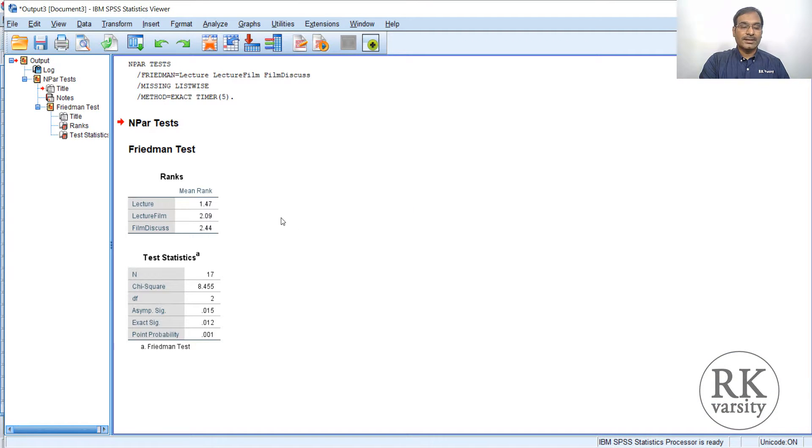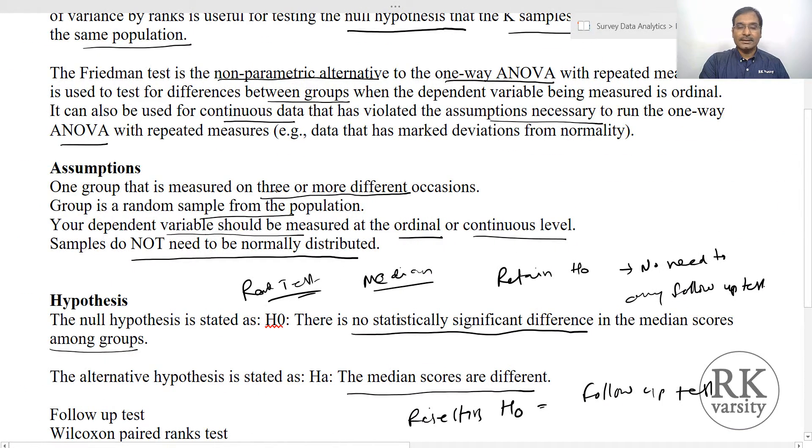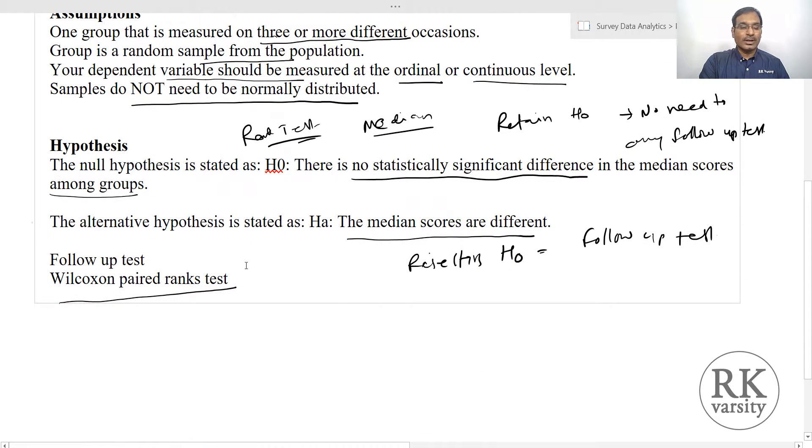So here is the result. Now the mean ranks of lecture is 1.47, lecture plus film is 2.09, film followed by discussion is 2.44. And n, total number of respondents, are 17. The chi-square value is 8.45, and degrees of freedom is 2, that is 3 minus 1. Then exact significance value is 0.01, which is less than 0.05. This indicates that you are rejecting the null hypothesis. So when you are rejecting the null hypothesis, this clearly indicates that there is a difference in the opinions expressed by individuals of different groups. So here you are rejecting the null hypothesis, saying that the median scores are different.